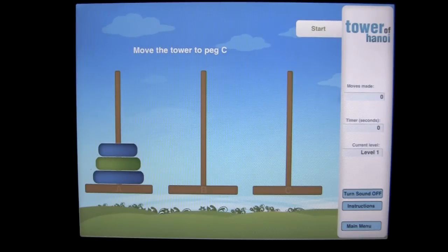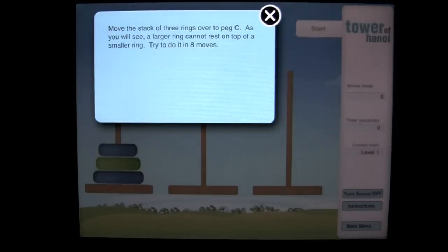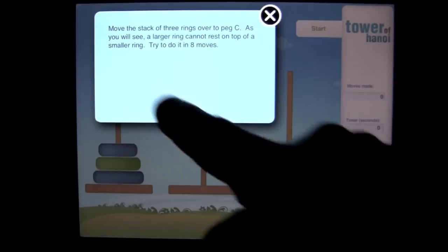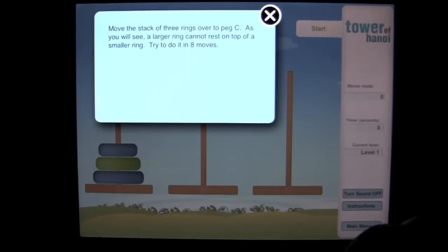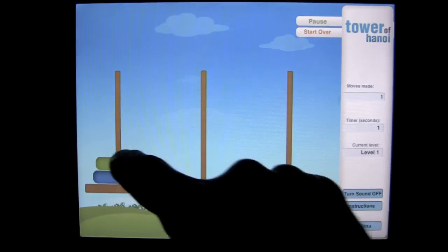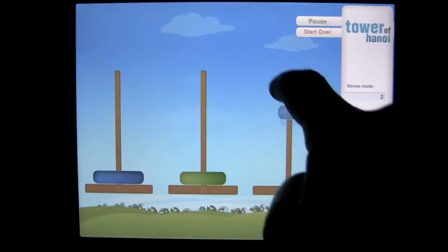If you don't know how to play this game, it says move the tower to peg C. Tap on the instructions down here on the bottom right side. You can also access the main menu there or turn off the sound. Move the stack of three rings to peg C. As you will see, a larger ring cannot rest on top of a smaller ring. Do it in eight moves. The challenge is to do this in eight moves.